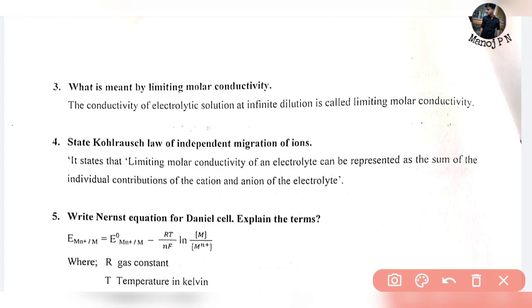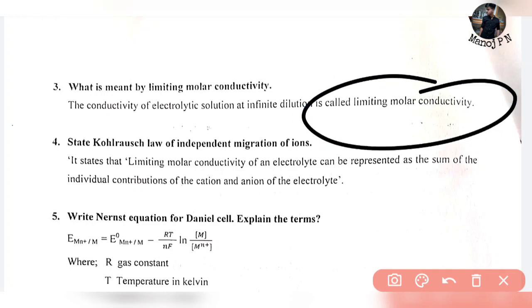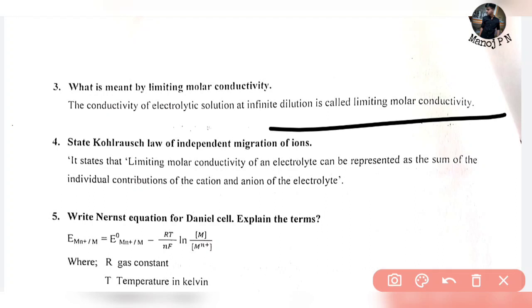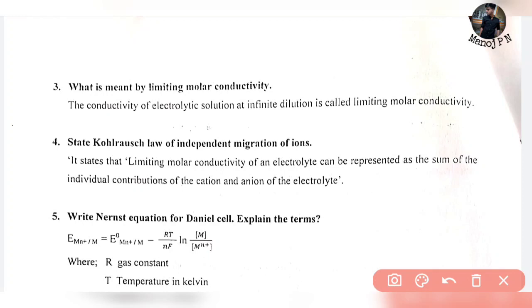The fourth question: state Kohlrausch's law of independent migration of ions. The limiting molar conductivity of an electrolyte can be expressed as the sum of the individual contributions of its cations and anions. So limiting molar conductivity equals the sum of the individual contributions of cations and anions of the electrolyte.